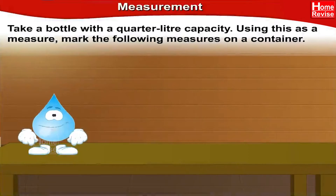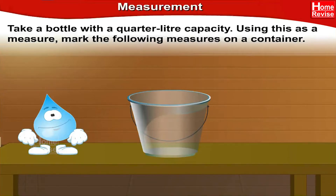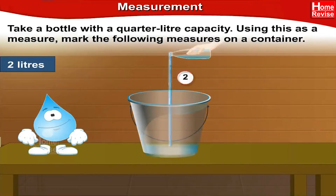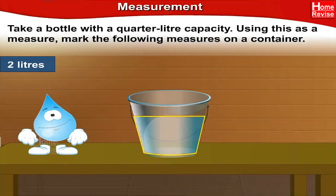Let us find a bottle with a capacity of quarter liter and fill water in it to the brim. First, let us take 2 liters of water in a container. If you pour four times quarter-liter of water it makes 1 liter, so for 2 liters you need to pour water 8 times with your quarter-liter bottle. Now we have 2 liters of water in the container — let us mark this measure on the container.